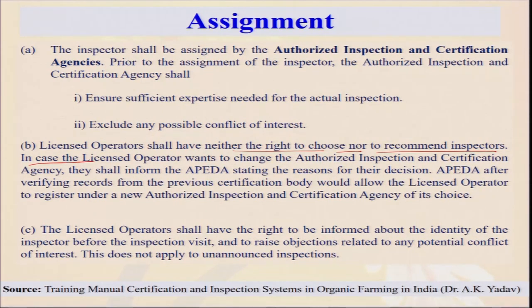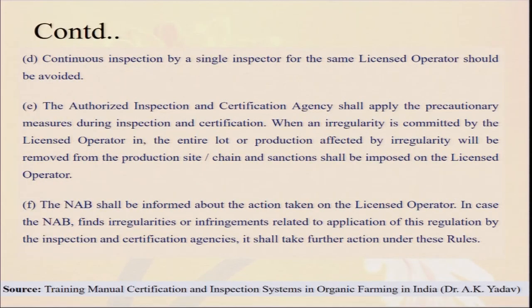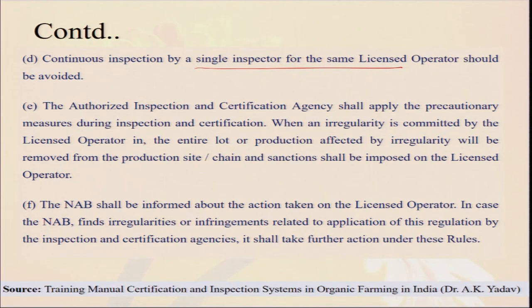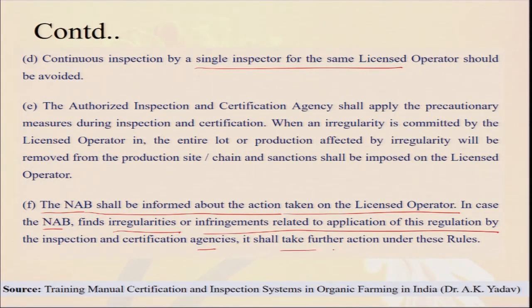Suppose an inspector is also farming organically and is a relative or friend of the farmer being inspected — this type of conflict of interest should not exist. Continuous inspection by a single inspector for the same site should be avoided, to prevent bias or influence from farmers. Sometimes the same inspector is not allowed and must be changed. The authorized inspection and certification agency shall apply precautionary measures. The NAB — the National Accreditation Body — shall be informed about any action taken on the license operator, and if the NAB finds irregularities related to the certification agency, further action shall be taken.